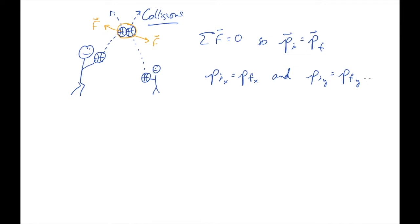Often in this class we'll be in one dimension, so you'll only have one. Another thing to notice about this equation is to think carefully about what it applies to. It applies to the system of colliding objects, and it only applies immediately before to immediately after the collision. This basketball's momentum is not conserved, but the two of them together have their combined momentum conserved during the collision.